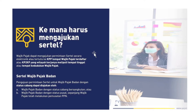Kita review sebentar, kemana kita harus mengajukan sertifikat elektronik? Wajib pajak dapat mengajukan permintaan sertifikat elektronik secara elektronik atau tertulis ke KPP tempat wajib pajak terdaftar, atau KP2KP yang wilayah kerjanya meliputi tempat tinggal atau tempat kedudukan wajib pajak. Untuk sertifikat wajib pajak badan dengan status cabang, pengajuan dapat diajukan oleh wajib pajak badan status cabang yang bersangkutan atau wajib pajak badan status pusat, sepanjang wajib pajak telah melakukan pemusatan PPN.